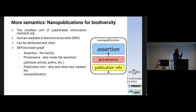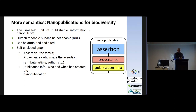There is also publication info: who has done this assertion and when it was published. Each nanopublication is actually a small self-enclosed graph. The most important thing about nanopublications is that they are not just human readable but entirely machine-actionable, and they are entirely based on ontologies and controlled vocabularies — so they are classical Web 2.0 creations.